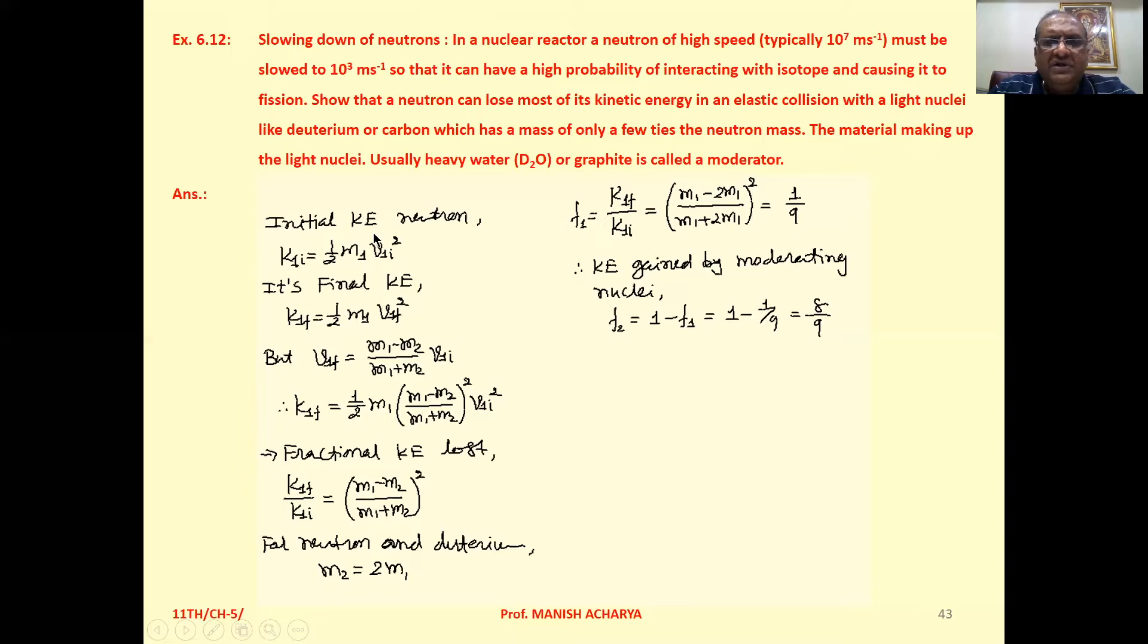Initial kinetic energy of neutron is K₁ᵢ = ½M₁V₁ᵢ². The final kinetic energy K₁f = ½M₁V₁f². We already derived the equation of velocity after collision: V₁f = (M₁ - M₂)/(M₁ + M₂) × V₁ᵢ. If we substitute this equation for V₁f.